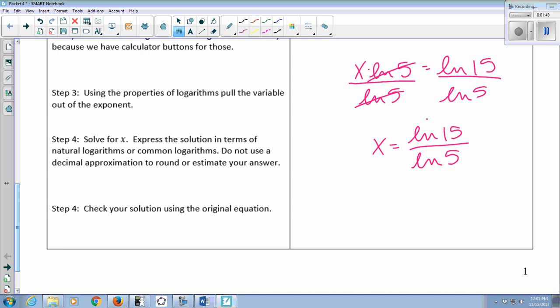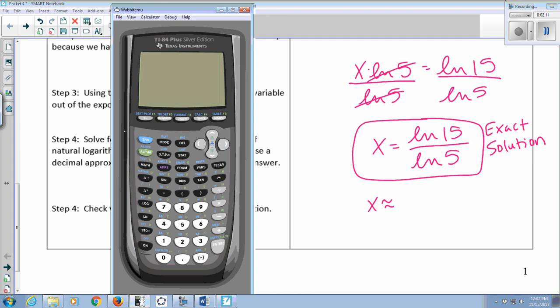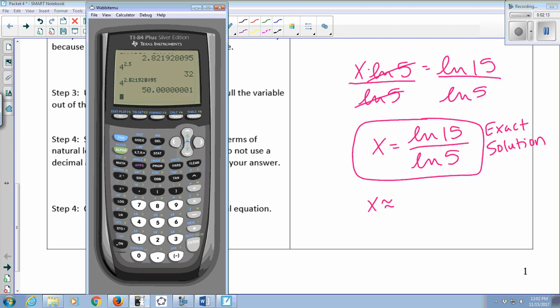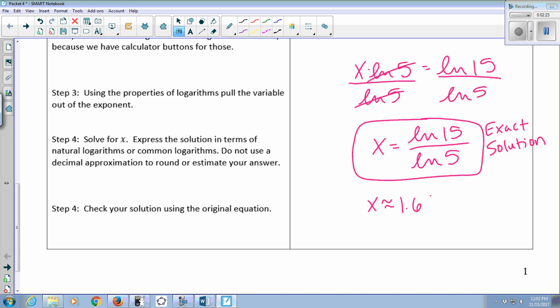So that is called an exact solution. In your homework or on a quiz or a test, if you're asked for an exact solution, you would just leave the logarithms in there. And then if you're asked for an approximate answer, you type that into your calculator. So this would say x is approximately, go to your calculator, type in ln of 15 divided by ln of 5, and you'd get 1.68.